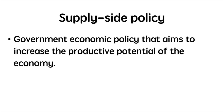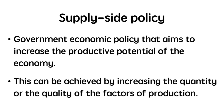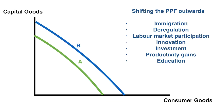We can illustrate successful supply side policies on either the PPF or the long-run aggregate supply curve. Let's quickly review what shifts an economy's PPF outwards. Any of the factors listed will shift out an economy's PPF from A to B by increasing productive potential.